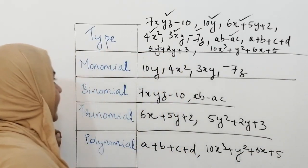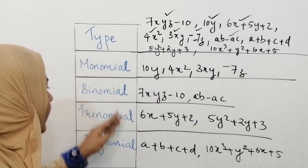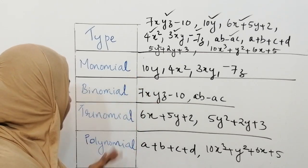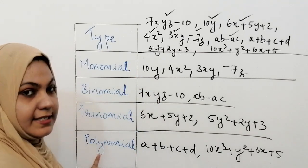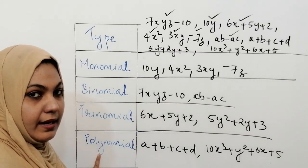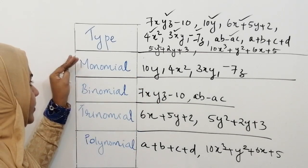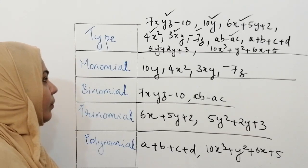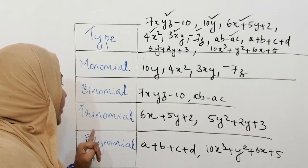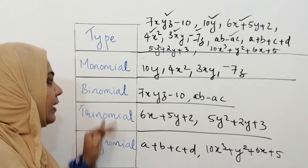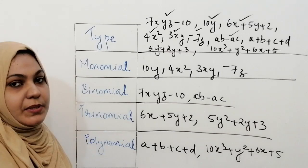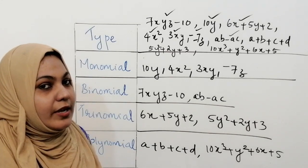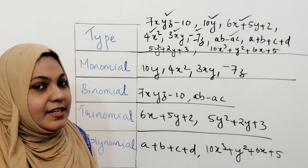As mentioned, monomial, binomial, and trinomial together are all called polynomial. I hope you understood what is monomial, binomial, trinomial, and polynomial. I hope you understood the different types of algebraic expression. I'm ending today's session.